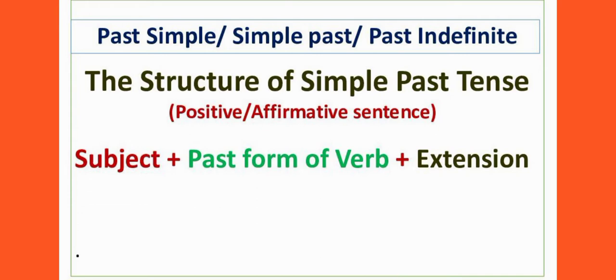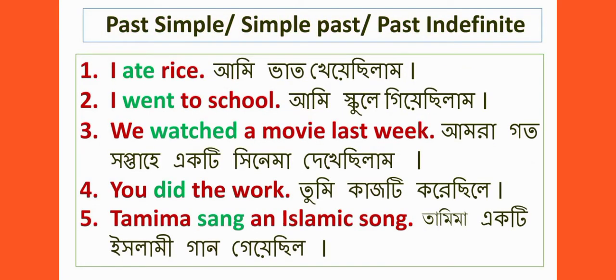50 sentences of past simple tense. Number one: I ate twice. Number two: I went to school. Number three: We watched a movie last week. Number four: You did the work. Number five: Tamima sang an Islamic song. Dear learners, in these sentences the past form of the verb is highlighted in green color.